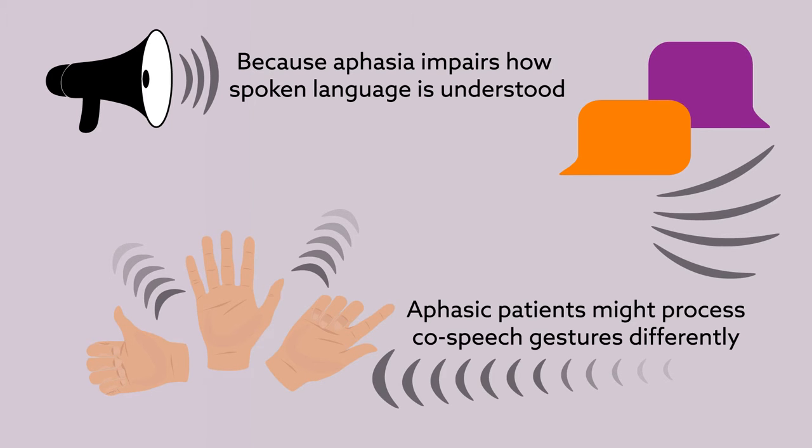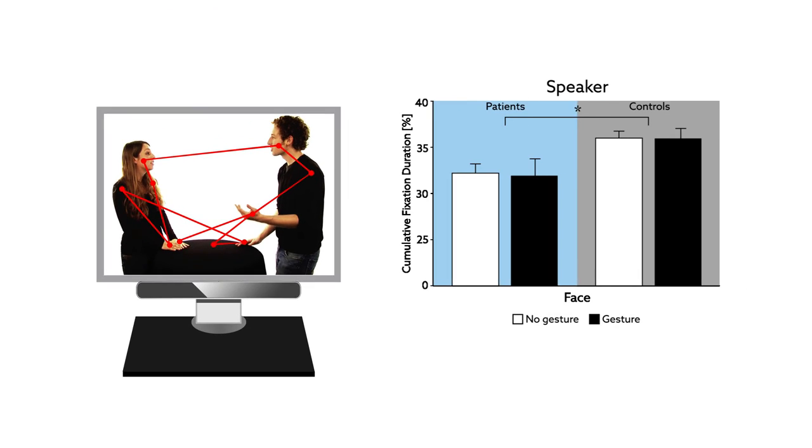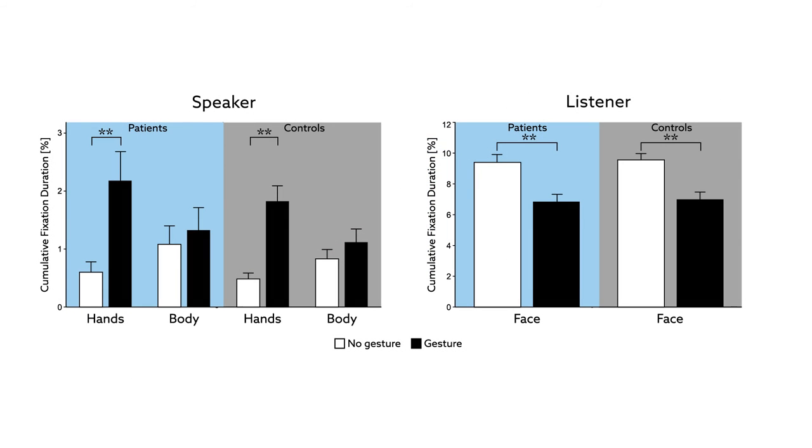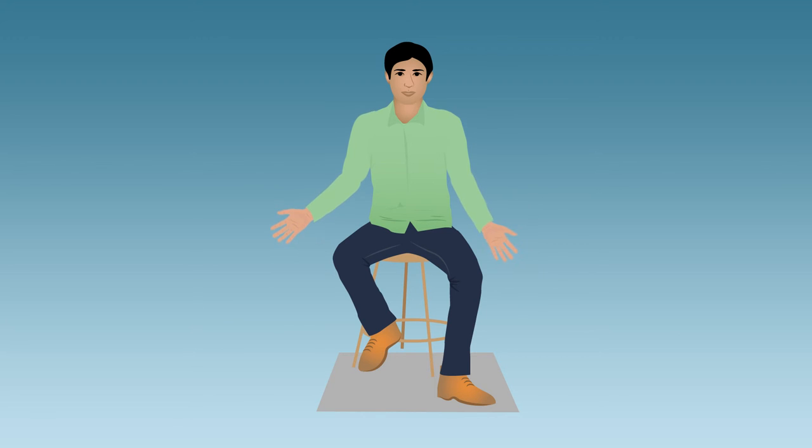When they analyzed the eye movements of stroke patients with aphasia as they watched the same videos of conversations, the researchers observed that the aphasic patients spent less time looking at the speaker's face than the healthy subjects. Co-speech gestures, however, also caused the aphasic patients to look more at the speaker's hands and less at the listener's face.